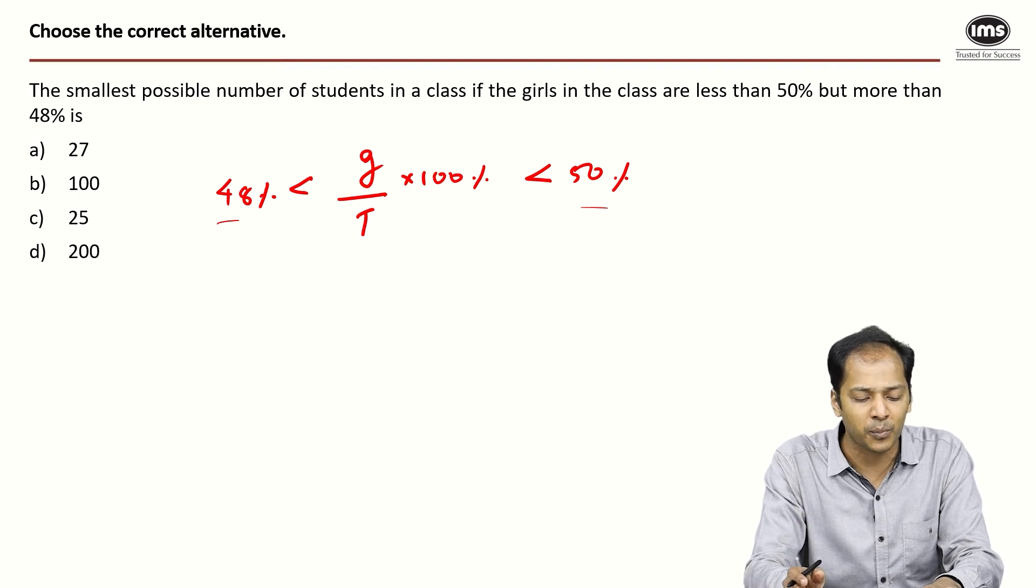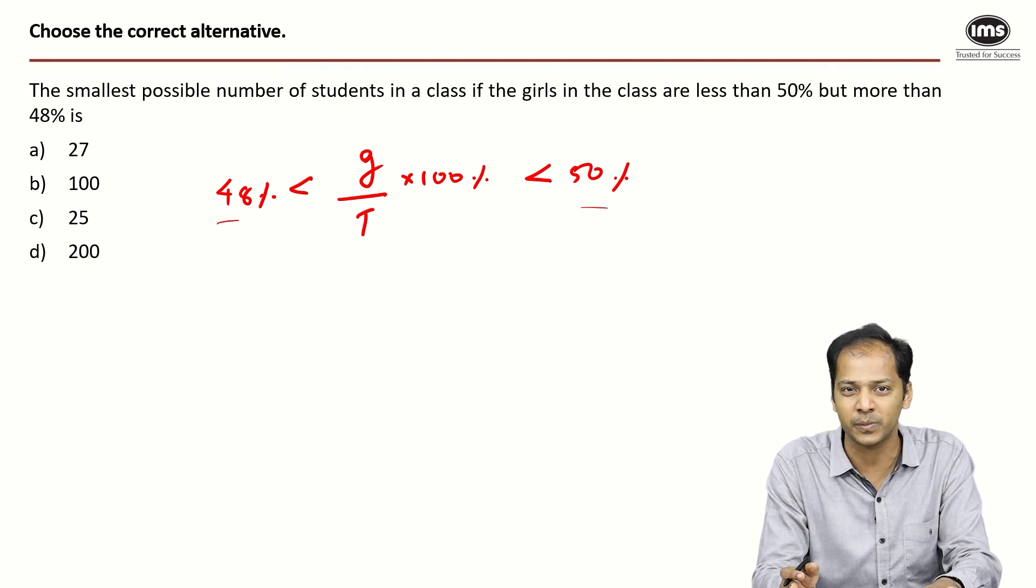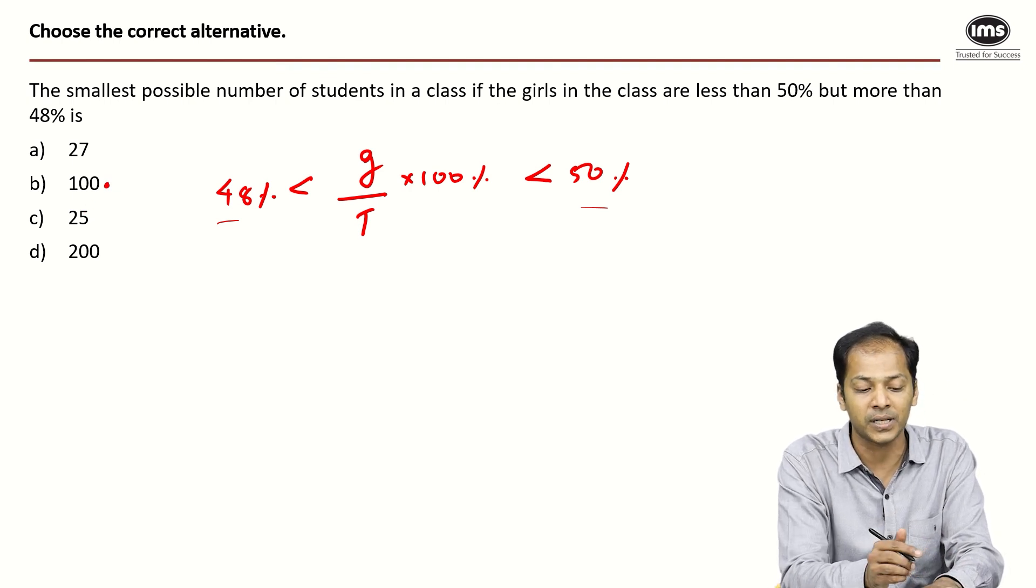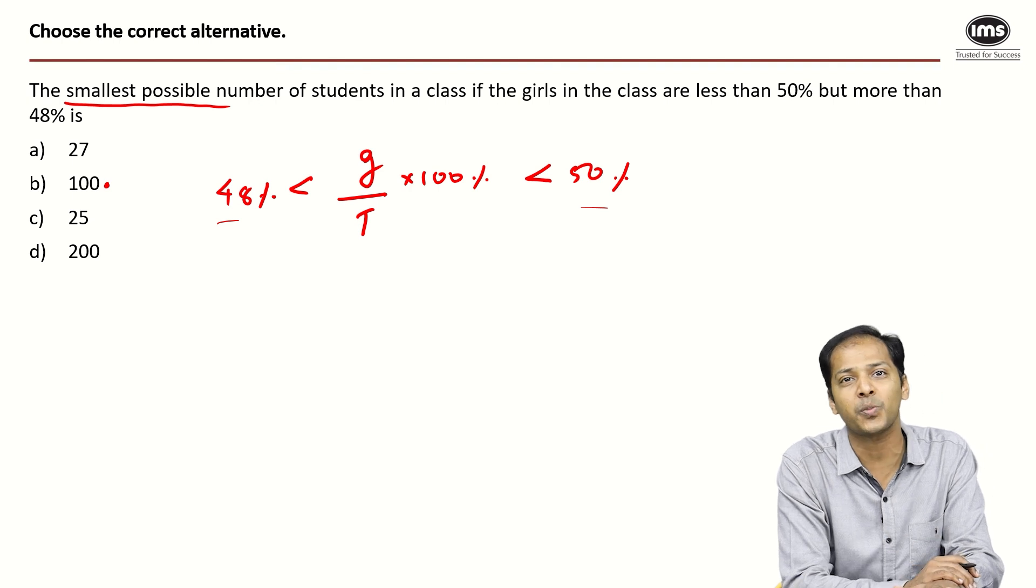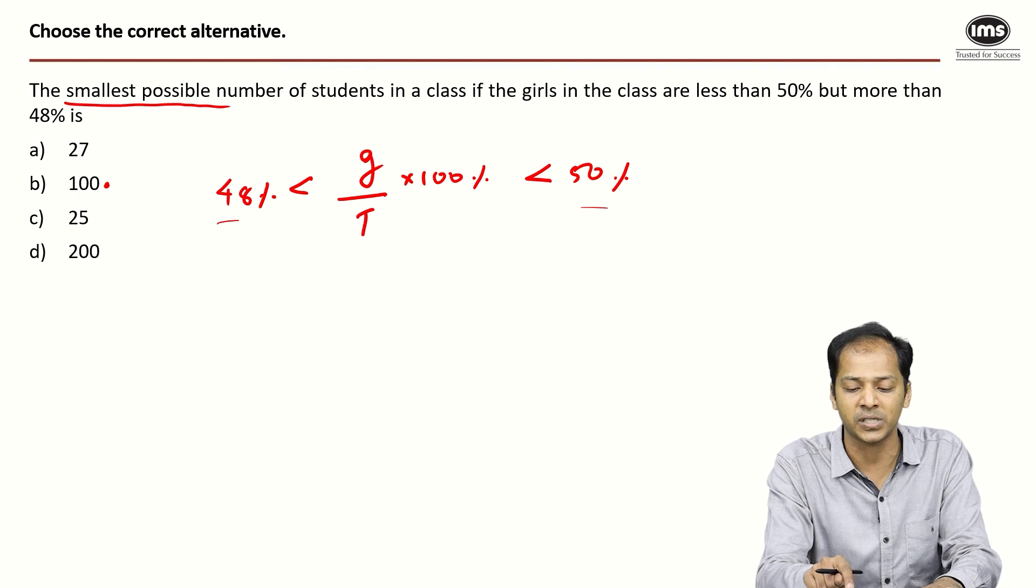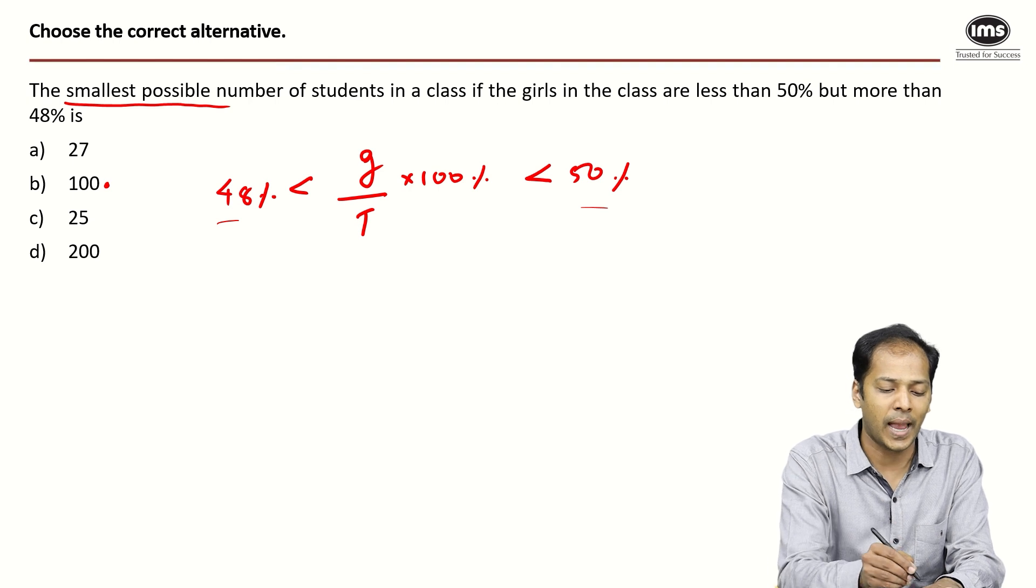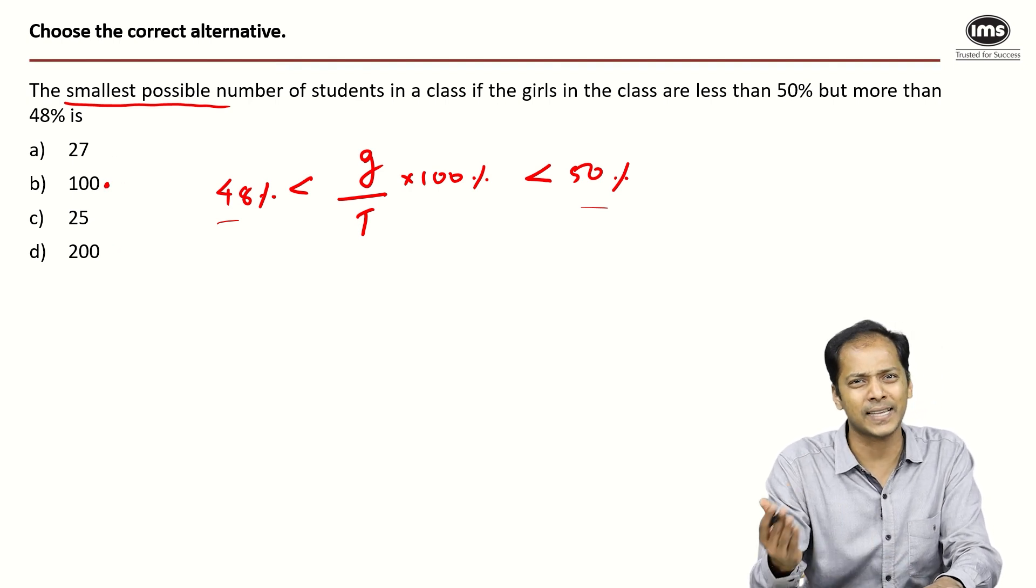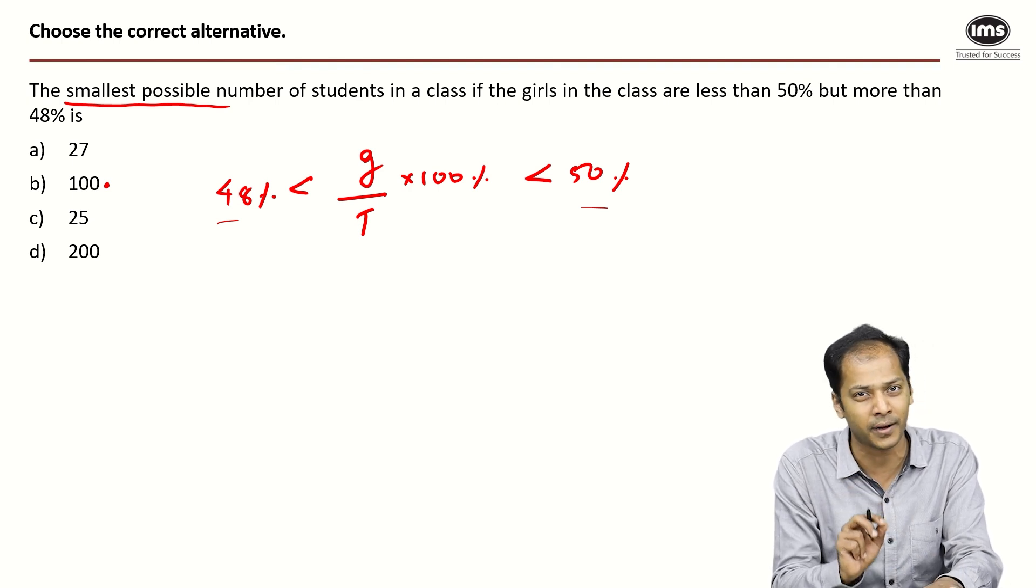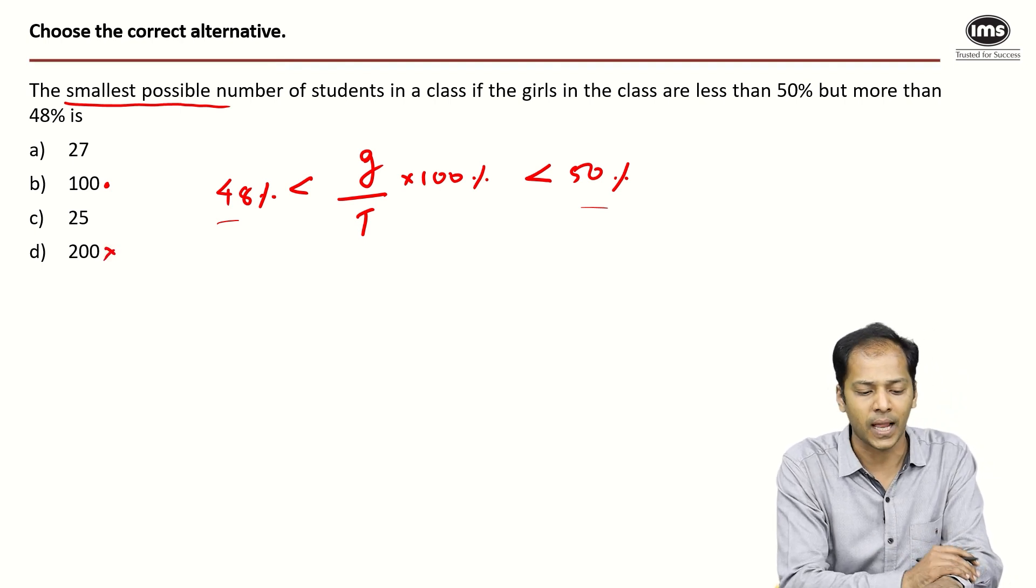If I take the total to be 100 and there are 49 girls, 49% is possible, so 100 is definitely a possible answer. But the question was what is the smallest such possible number. I'm not going to check 200 at all because 100 is sufficient, so 200 is definitely eliminated.